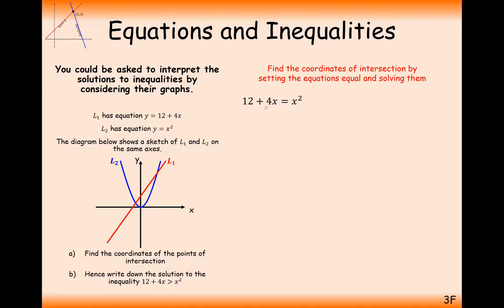So set your graphs equal to each other, 12 + 4x equals x², and then rearrange and solve this quadratic equation. We get solutions of x equals -2 or x equals 6. That's going to correspond with one solution here at 6 and this solution here at -2.